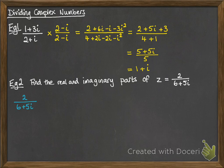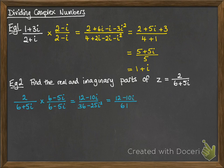So, we're going to do 2 divided by 6 plus 5i. So, we multiply by the conjugate of the denominator, and that gives us 12 minus 10i on the top, and 36 minus 25i squared on the bottom, which that denominator then simplifies to 61 once we substitute i squared in for minus 1.